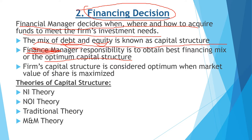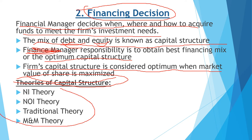The finance manager must find the optimum capital structure — the best combination of debt funds and equity (shareholders') funds — where the cost of capital is minimized and the value of the firm is maximized. A firm's capital structure is considered optimum when the market value of the share is maximized. Theories explaining this include: Net Income theory, Net Operating Income theory, Traditional theory, and Modigliani and Miller theory.